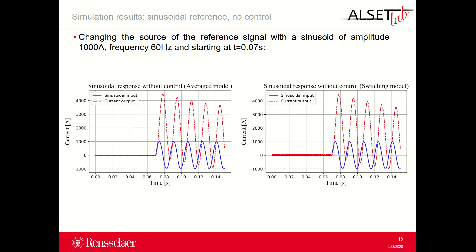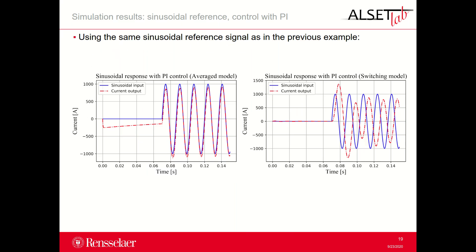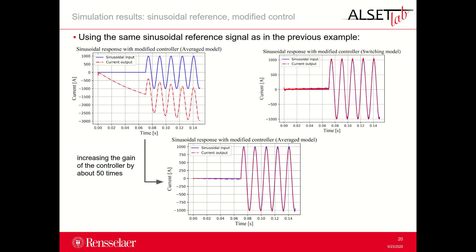Now we can analyze the simulation results changing the reference signal to a sinusoid with the parameters indicated in the slide. The behavior of the systems without any control is not able to track the reference signal for both the average and the switching model. Introducing the same PI control as in the step reference simulations, the behavior of the system is better with the average model than with the switching model; they both present errors in amplitude and phase compared to the reference, but the average model looks more aligned. Introducing a more elaborated control strategy, the behavior with the switching model is better, since the tuning of the control parameters was performed on the switching model. To get the average model behavior similar to the switching model, the gain of the controller has to be increased by about 50 times, as seen in the bottom plot.